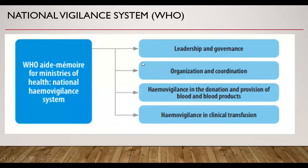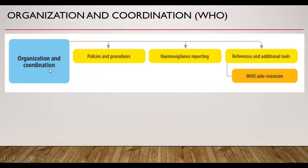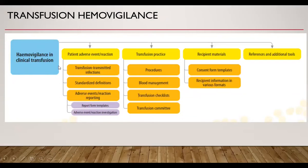A national Hemovigilance system requires leadership, governance, proper organization and coordination, and Hemovigilance coverage for both donors and transfusion recipients. There is a document known as the WHO Guide to Establishing a National Hemovigilance System, which is available online, along with many memorizing aids from WHO. Various formats are available online from WHO and other organizations for both donor reactions and recipient transfusion reactions.